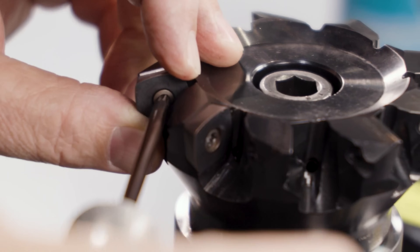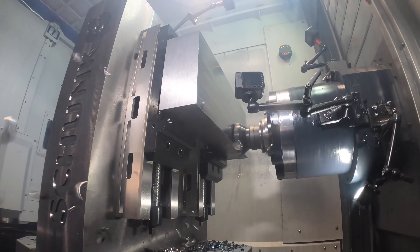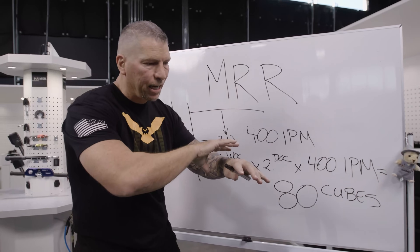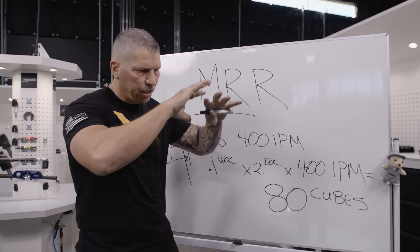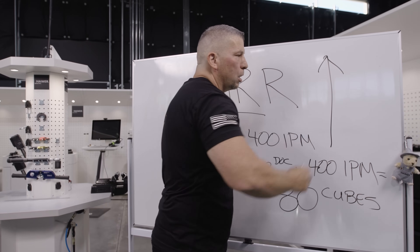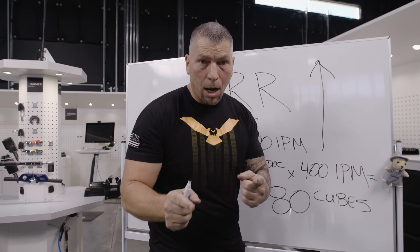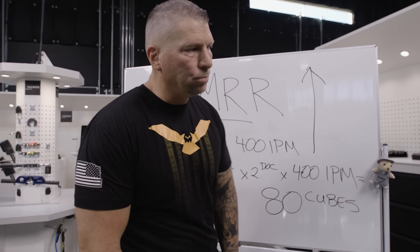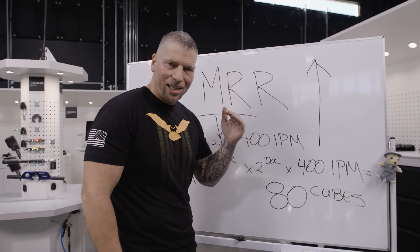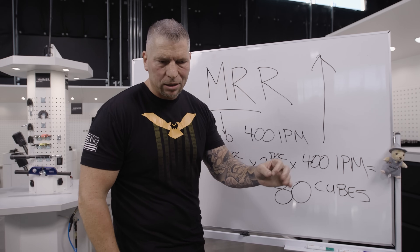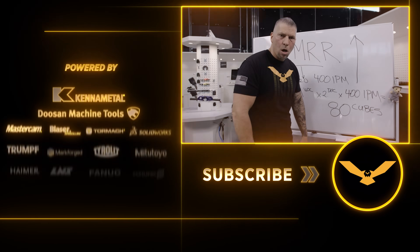At the end of the day, when you're looking at tools, testing them, and evaluating your spindle load, machine horsepower, torque, and fixturing — when you're looking at all the variables together, the ingredients for success — your goal is to get your cubic inches per minute as high as possible so your company can make a great profit and lower manufacturing costs. MRR is the most important measurement in CNC machining. If you love the videos, please hit the subscribe button, hit the like button, and put your comments down below.